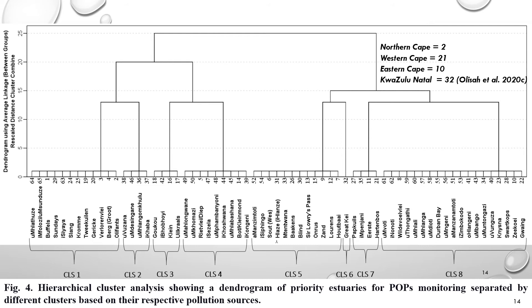Estuaries in Cluster 5 are those exposed to urban runoff. Clusters 6 and 7 represent estuaries polluted only by effluent from wastewater treatment works. About 79% of estuaries in Cluster 8 are located in the KZN province and are exposed to urban runoff and wastewater from wastewater treatment works. In total, Northern Cape has 2 estuaries, Western Cape has 21, Eastern Cape has 10, and KwaZulu-Natal has 32, giving a total of 65 estuaries indicated for POPs investigation based on their exposure to potential pollution sources.